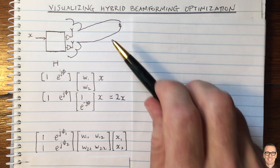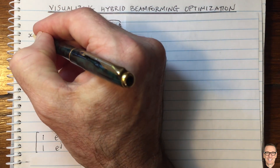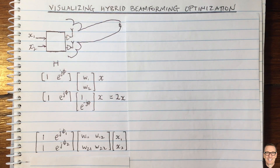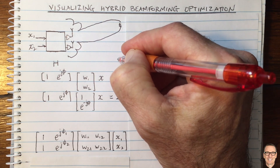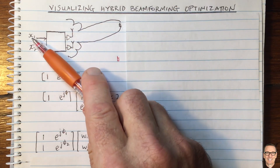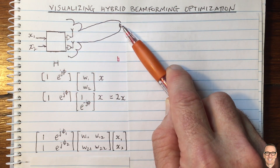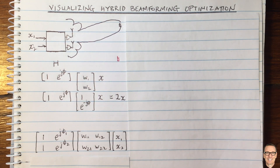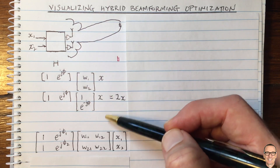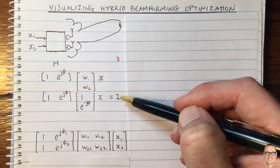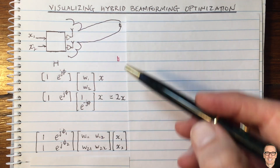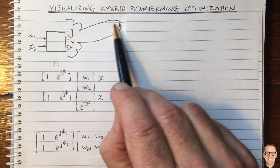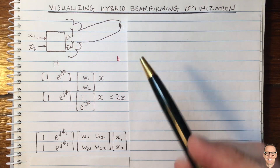Now let's think about when we've got two inputs. We've got two different constellation points and two users, where the second user is in a different direction. We'd like constellation point X1 to go to user 1 and constellation point X2 to go to user 2, with no interference if possible. So now we've got two aims: we want to make the signal strong in the direction of interest, and we also want no interference between the two users.